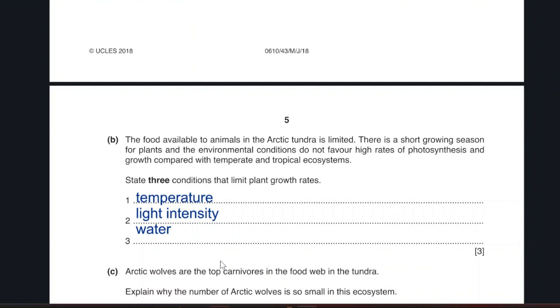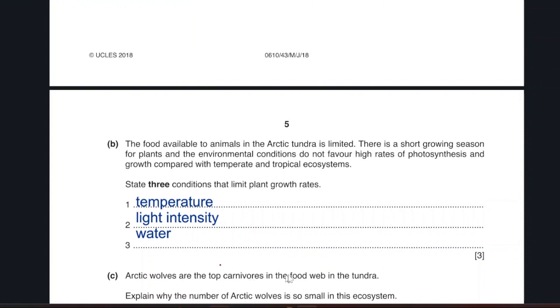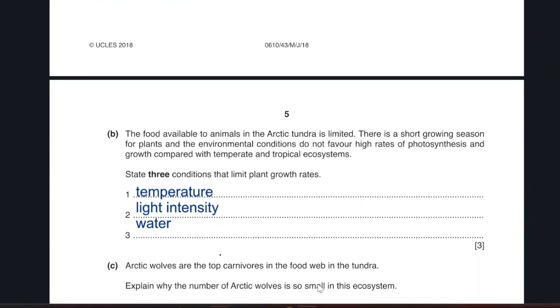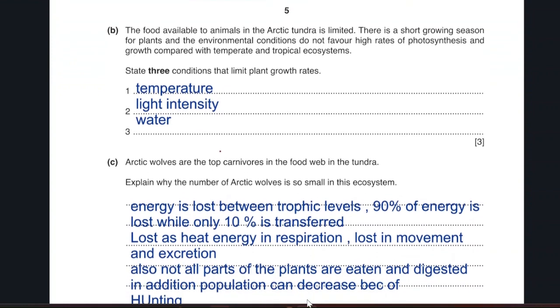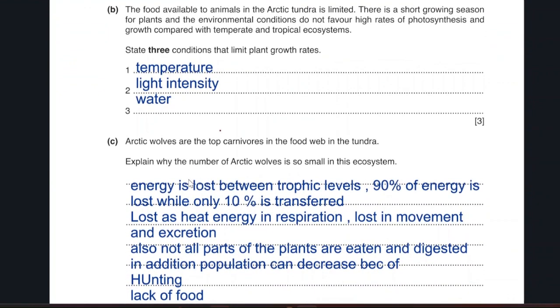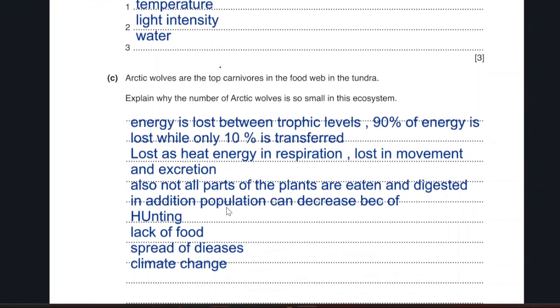Arctic wolves are the top carnivores in the food web. They are the top carnivores. Explain why the Arctic wolves is so small. The number is so small in the ecosystem. In this question, there is two parts. The part related to the food web and the energy, and the part related to the population. Why is it small? Why is the population small? Because the energy is lost between trophic levels.